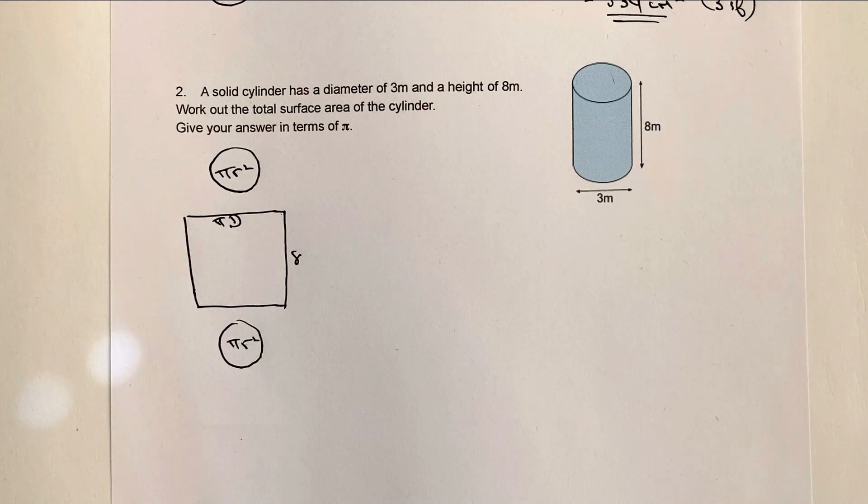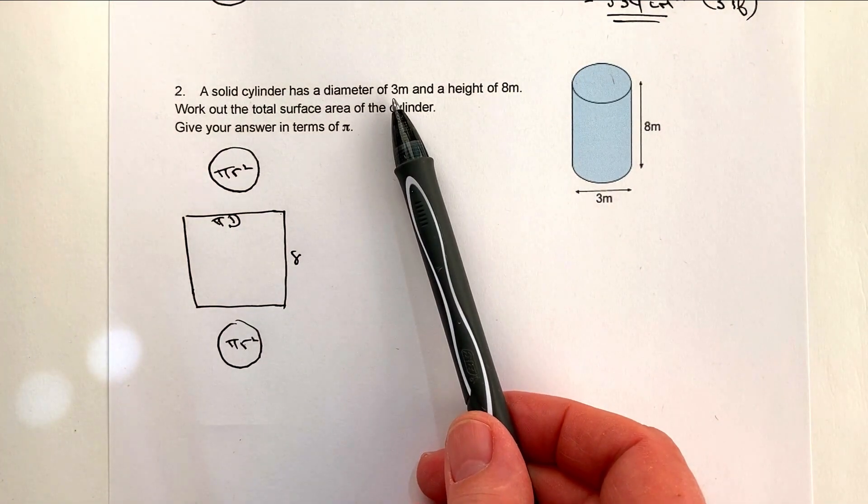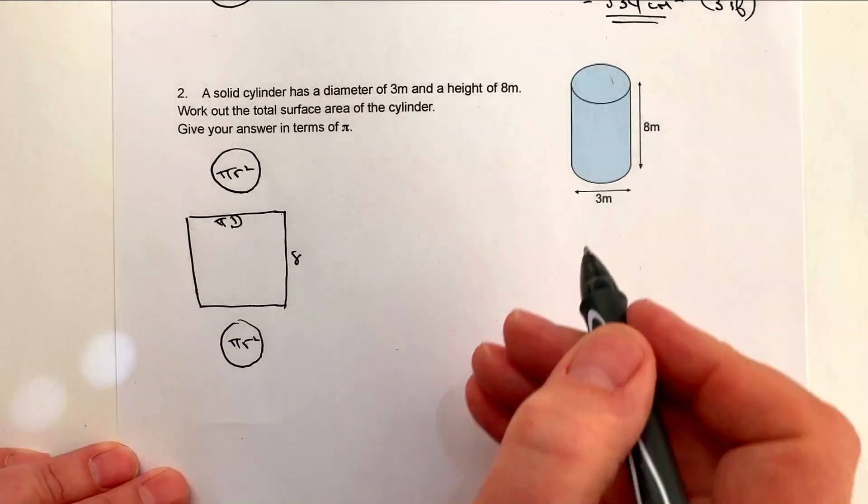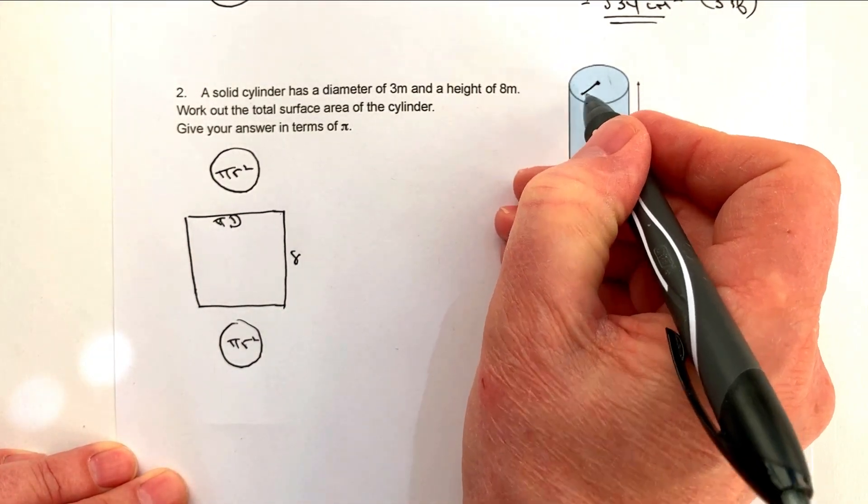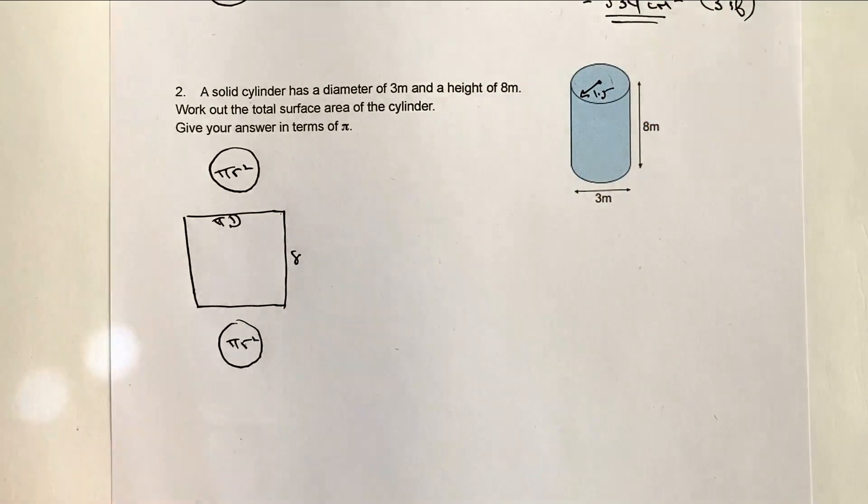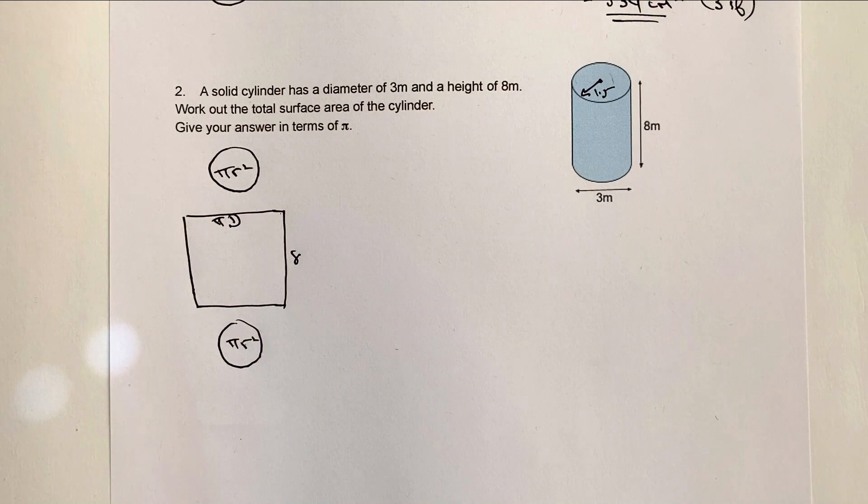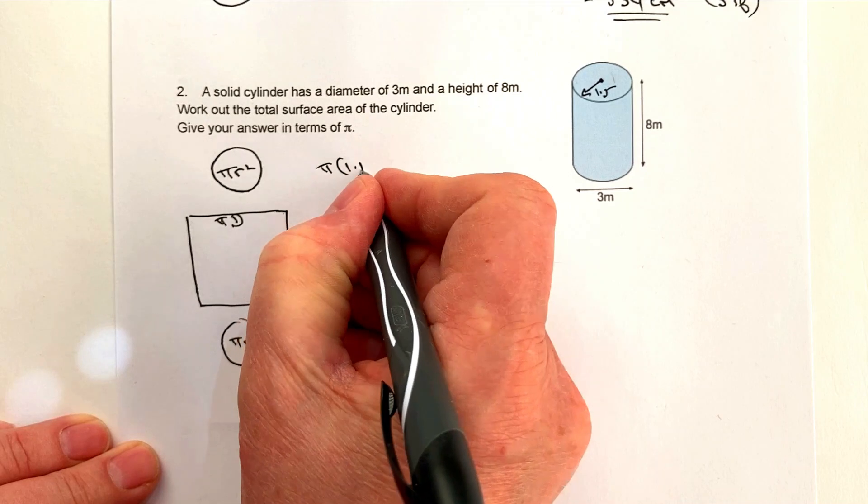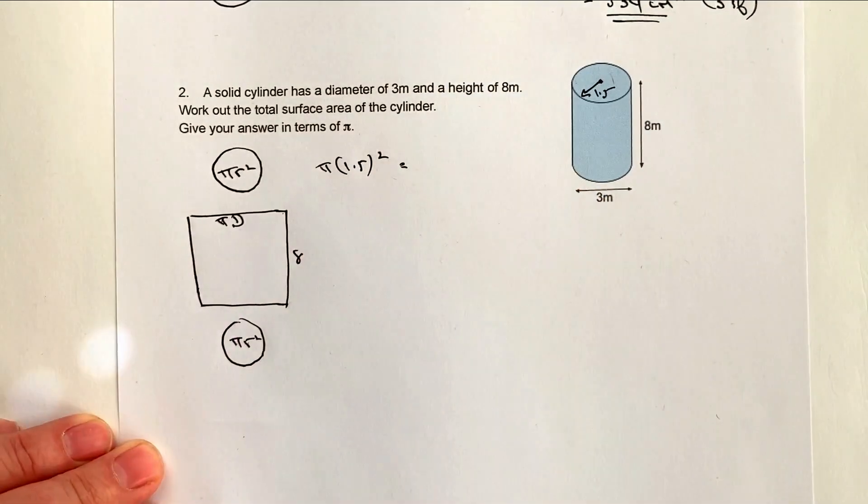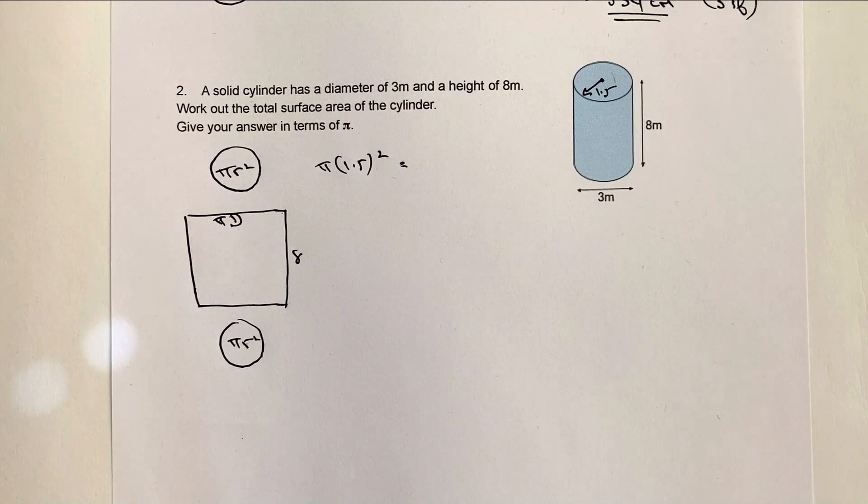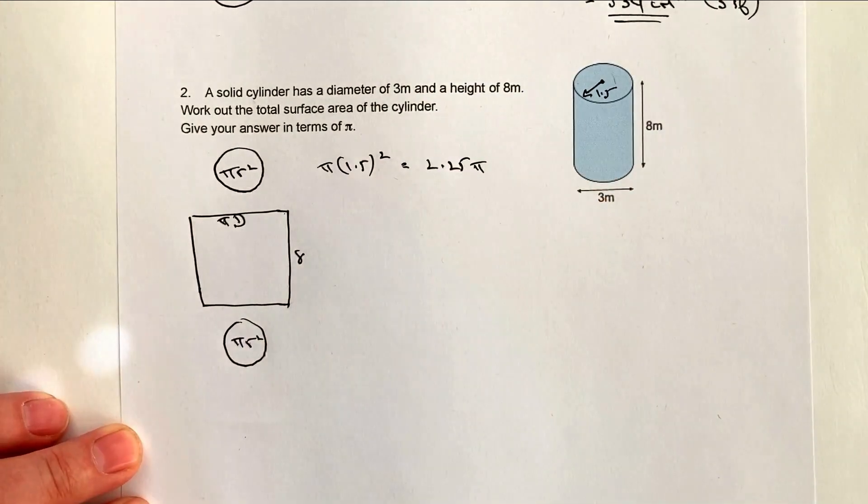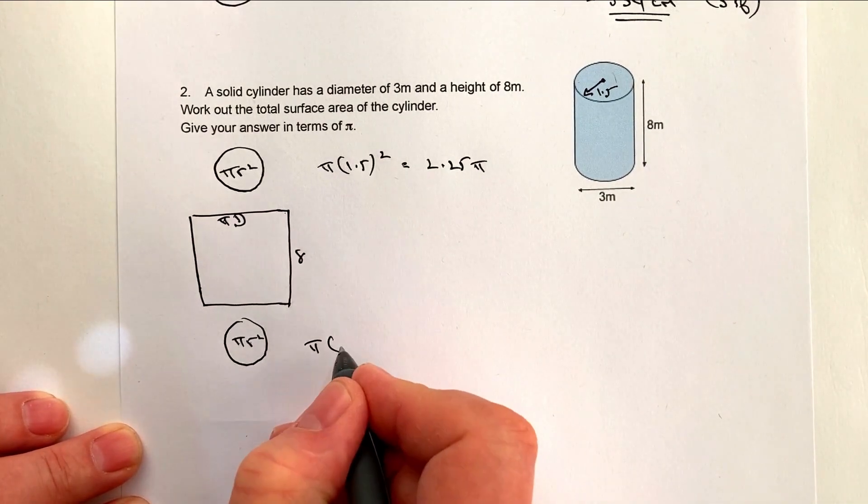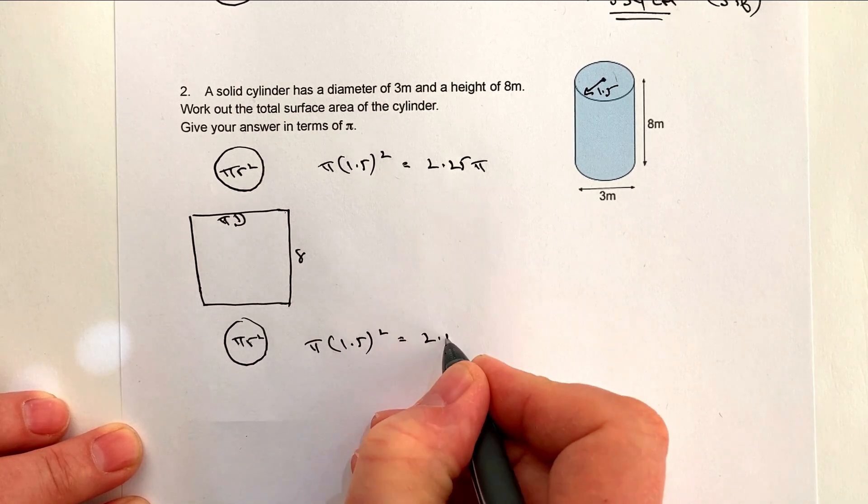So let's now put in some numbers. Now we're going to be a little bit careful because what they've done is they've given us the diameter of 3 meters. Well, actually, that means that the radius itself is going to be 1.5. So just be very, very careful not to get caught out by those sorts of things. What you need to do is make sure you've got the radius each time if you're using this particular formula. So I'm going to have π × 1.5². Pop that into a calculator or just work it out yourself and you should get 2.25π. And it's going to be exactly the same for the bottom circle, π × 1.5² = 2.25π.